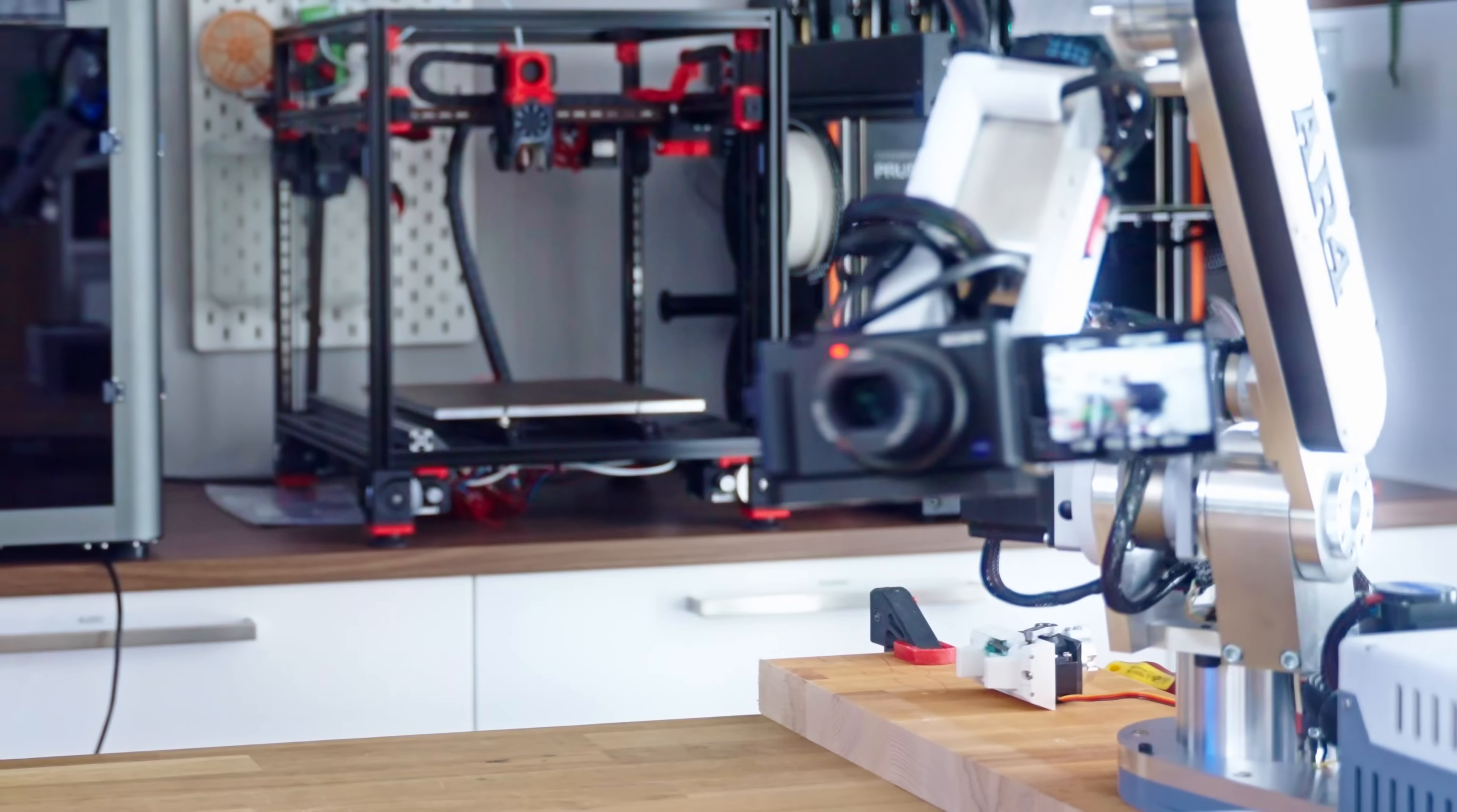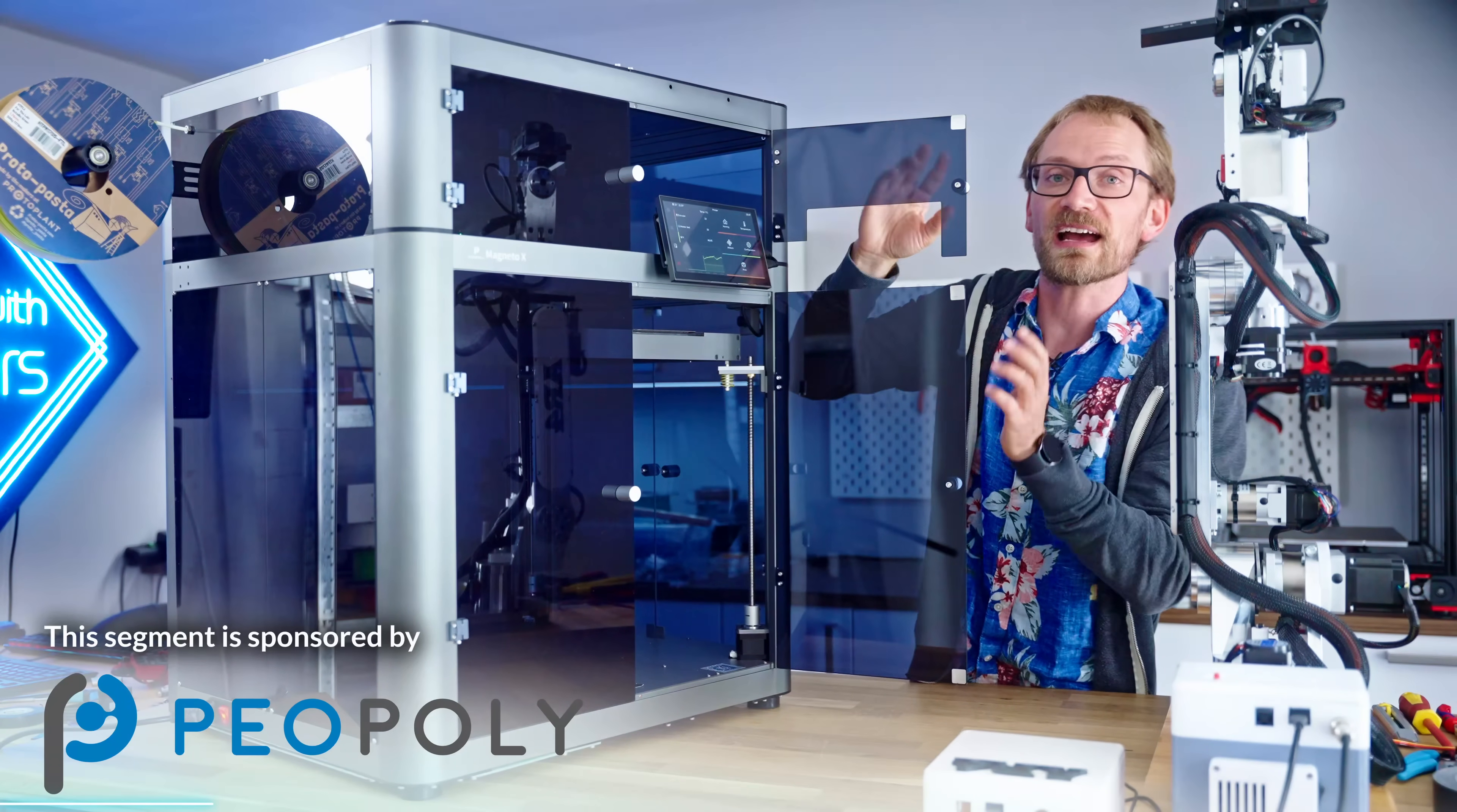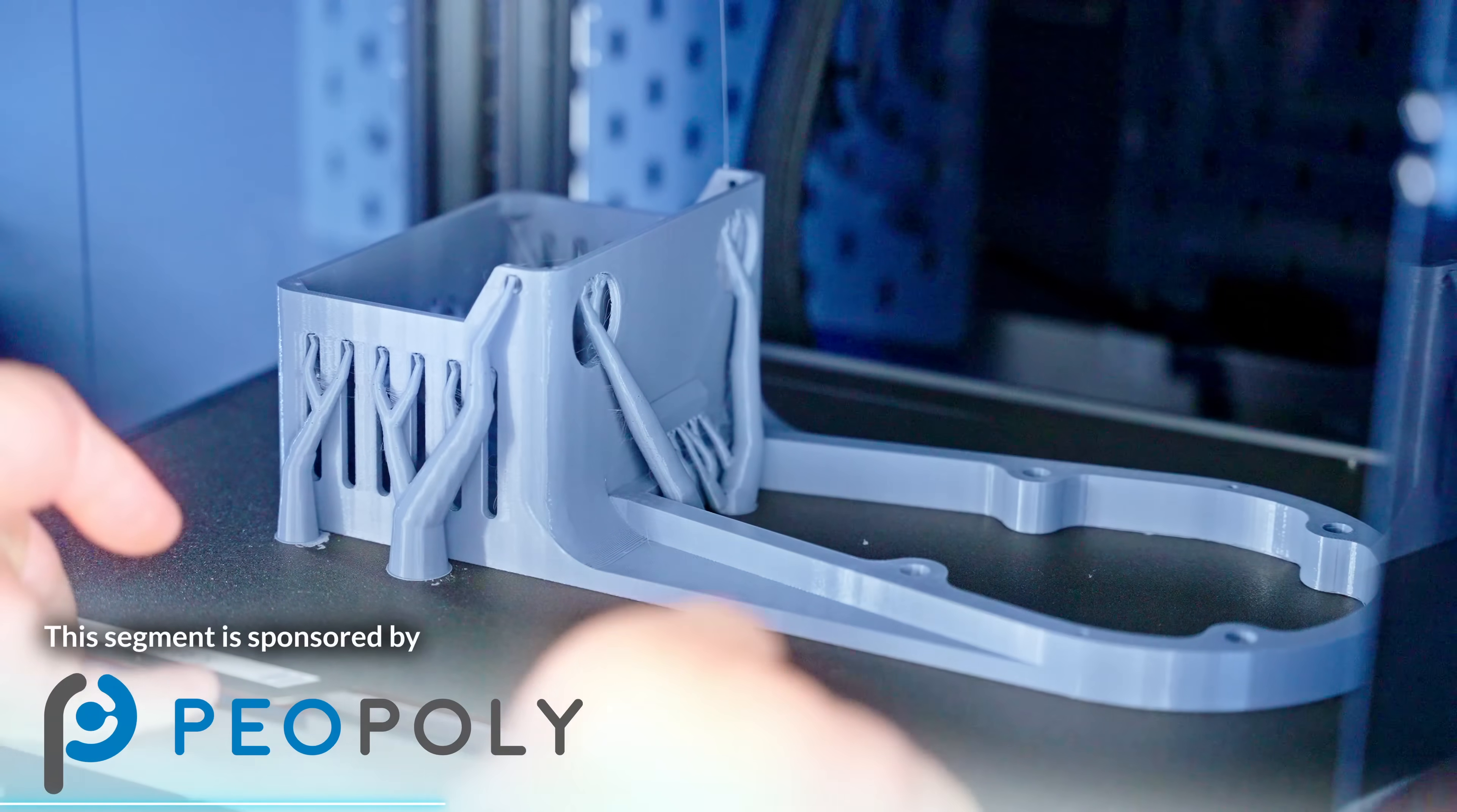To build the AR4, we're gonna need some printed parts, and for that we're gonna use today's sponsor, the PewPoly Magneto X. Mine now wears the optional full enclosure, which is fantastic for using the full 400x300x300mm build volume even with warp-happy high-performance materials.